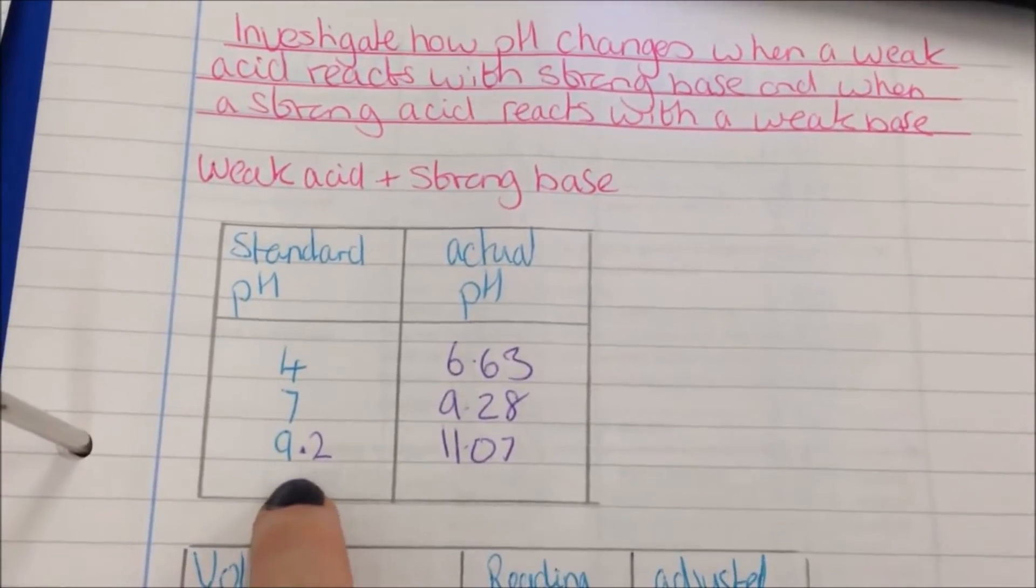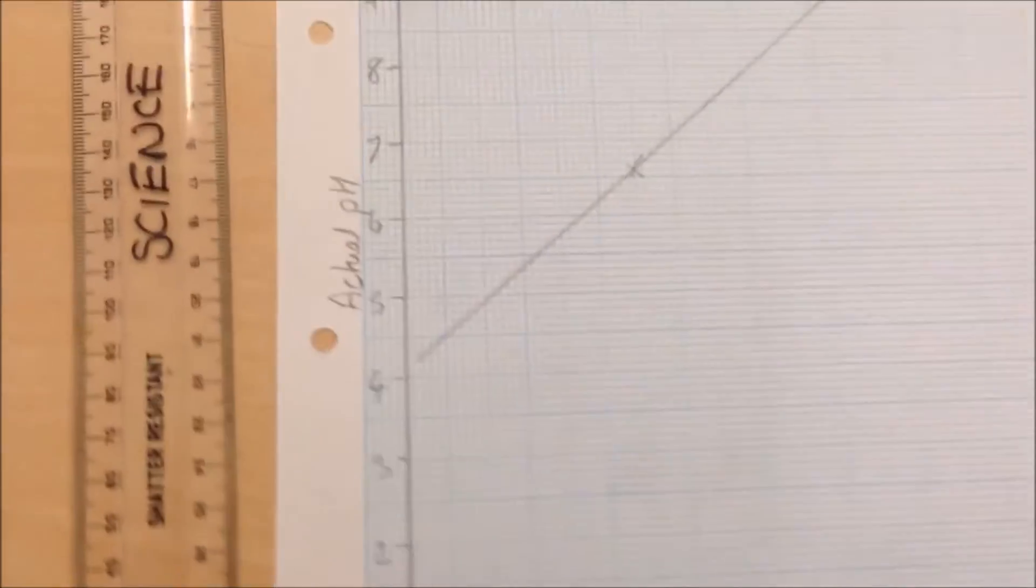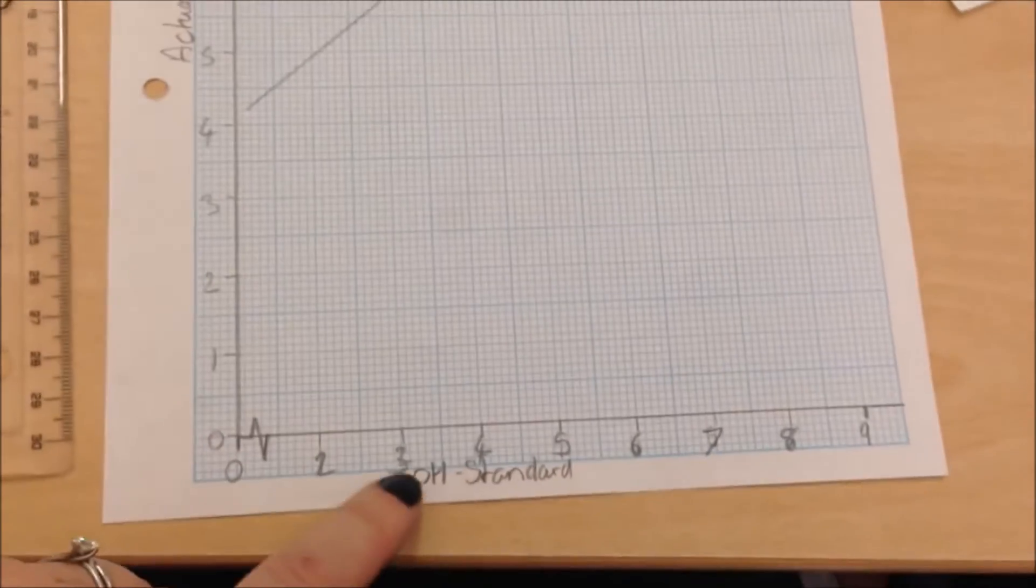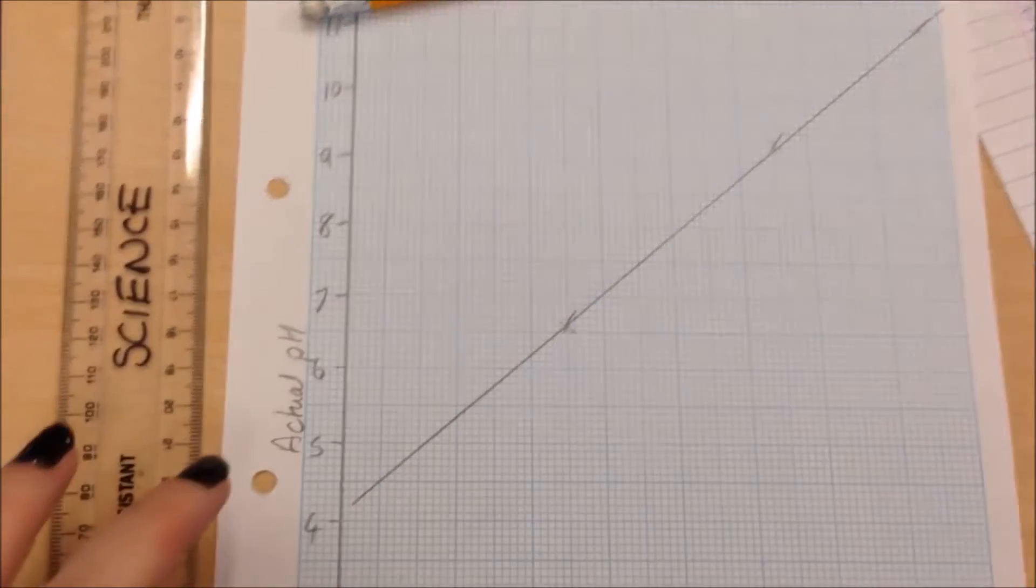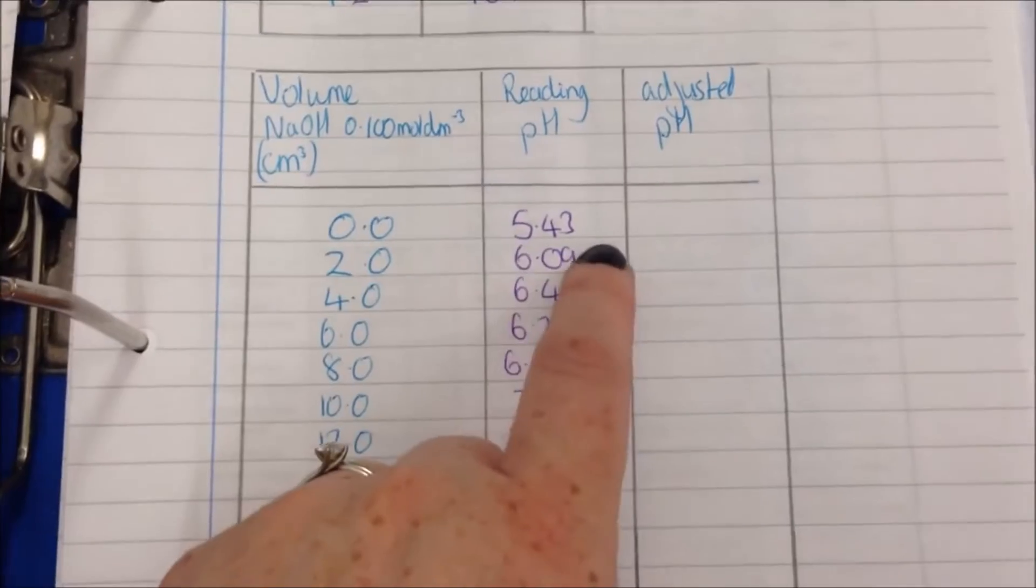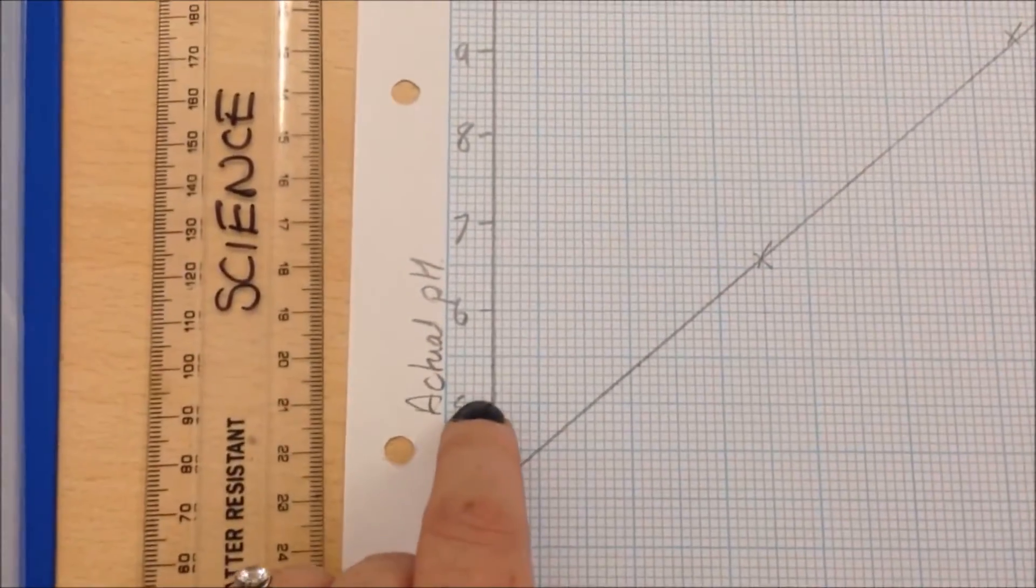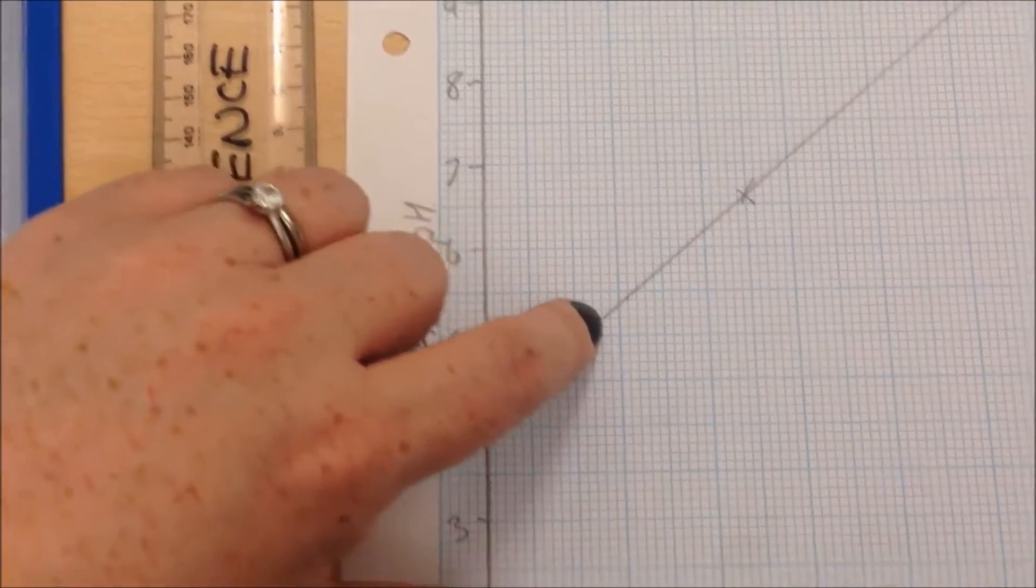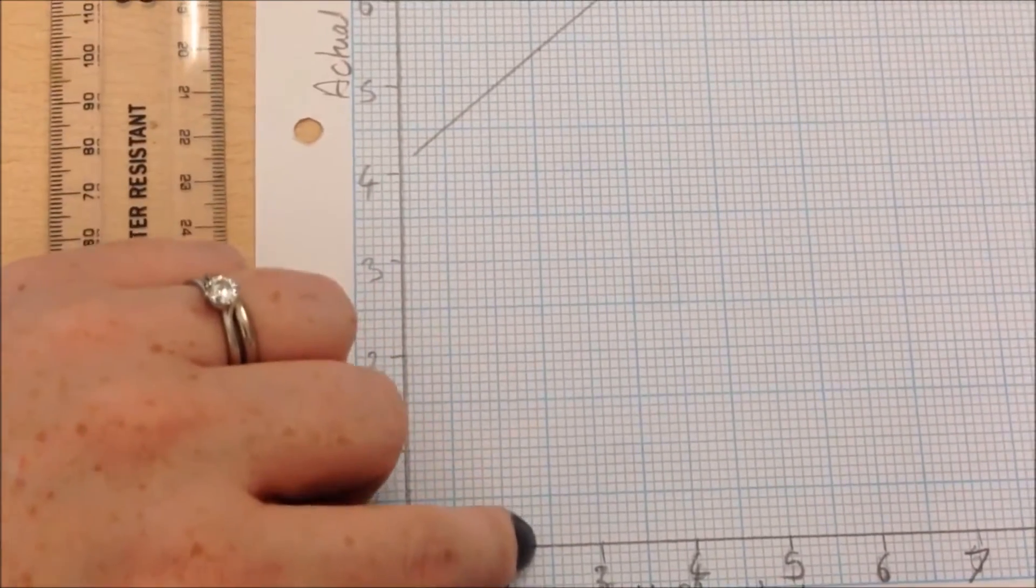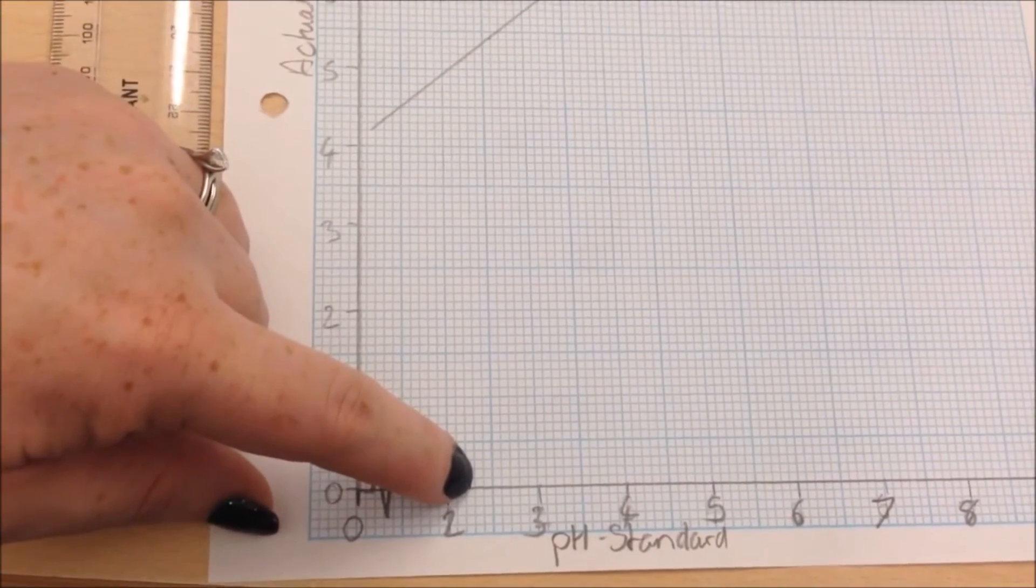So now I've done the experiment and I've got where the pH standards were and what the actual pH was. I've drawn my graph over here of what the actual reading was versus the pH standard. You can see I've plotted my points and they come out in a really nice straight line. So the next thing I need to do is look at my experimental data, take my reading of 5.43 here, find 5.43, go across and then read down. I'll do this properly in a second so I can take what the pH meter said to what the actual pH was.